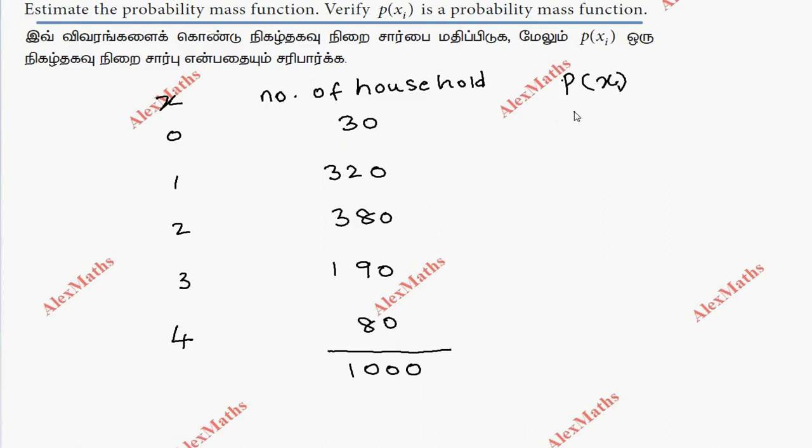So 30 out of 1000, 320 out of 1000, this is 380 out of 1000, this is 190 out of 1000, this is 80 out of 1000.